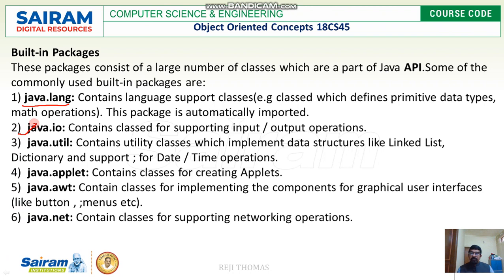The next one is java.util, which provides or contains utility classes that implement data structures. You know what data structures are — like linked list, queues, and other operations like date and time. Everything is defined in java.util, which gives you utility classes to support all these kinds of data structures.